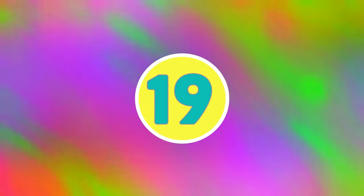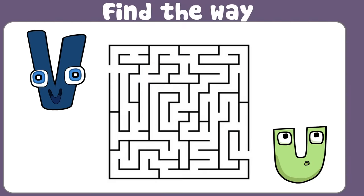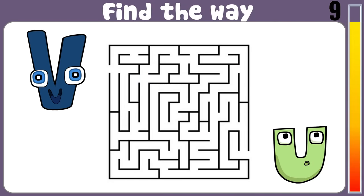Question 19. Next difficult question. Draw a path such that V reaches U.